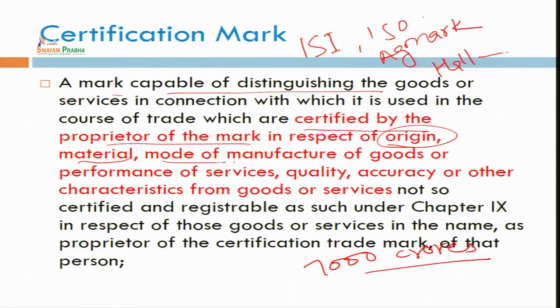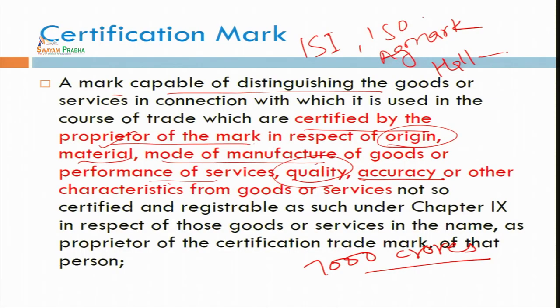The certification trademark confirms origin, material, mode of manufacture, performance of services, quality — how much minerals are there, quantity, date of manufacture, date of expiry, contents, accuracy. All these characteristics of goods and services have to be certified by the manufacturer or the proprietor of those goods. If we want to buy gold, we should go for the hallmark, because some certification mark is given by a proprietor authorized by the Government of India. That is a very important concept under trademark.